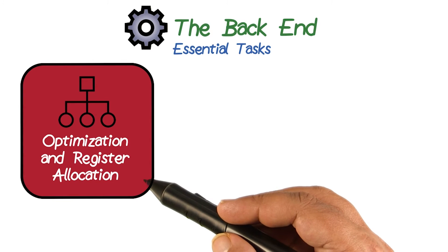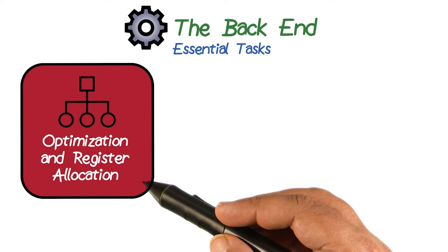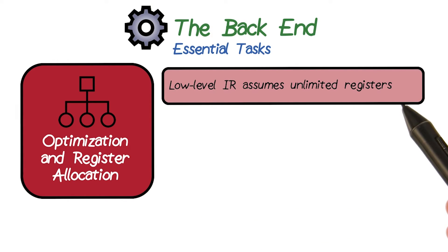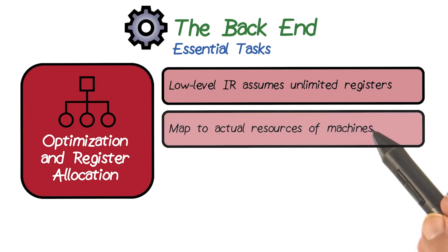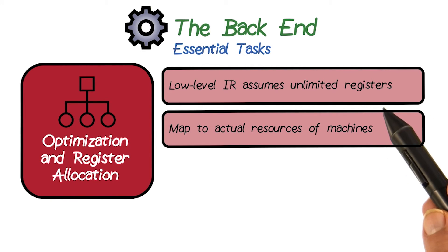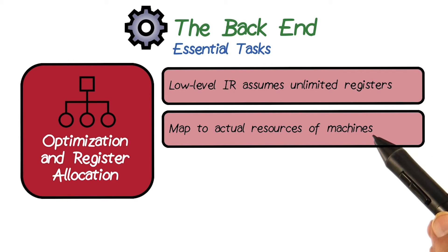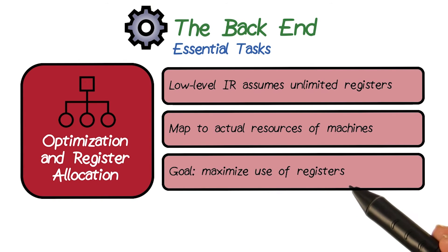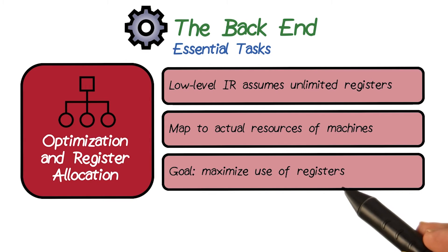The second phase, which is really critical for performance, is to operate values out of registers. This is called the register allocation phase. The goal here is that the lower-level IR assumes unlimited registers and unlimited memory to store values. The goal of this phase is to map these values to a finite number of registers — typically about 32 floating point and 32 fixed point registers — while there are many values in the program's IR. Therefore, our goal is to keep the best values in registers and maximize register use, reducing frequent memory accesses.